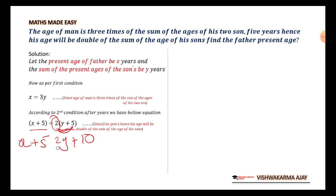Now, after that, we will be collecting all the variables in LHS and constant in another hand. X minus 2Y is equal to 10 minus 5. That is 5.